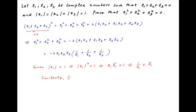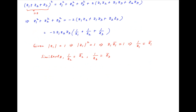Similarly, 1 upon z2 is equal to the conjugate of z2, and 1 upon z3 is equal to the conjugate of z3. Using these results, the value of z1 squared plus z2 squared plus z3 squared is equal to minus 2 times z1z2z3 times the conjugate of z1 plus the conjugate of z2 plus the conjugate of z3.